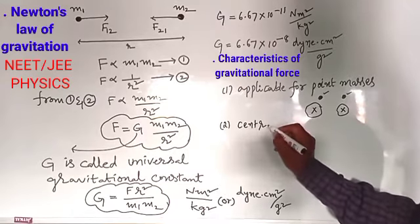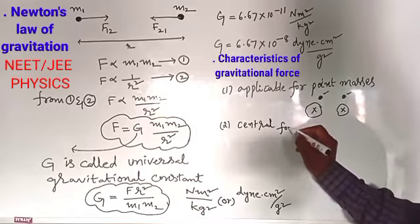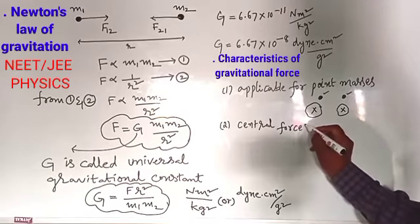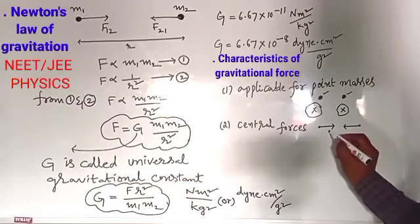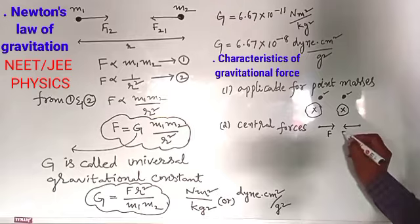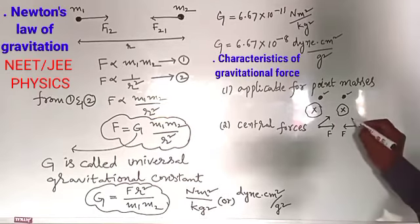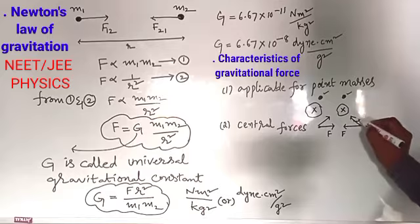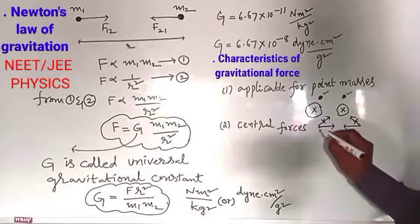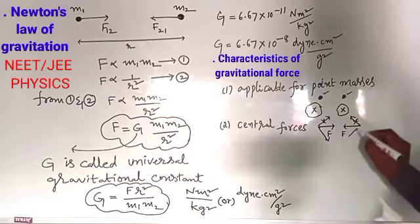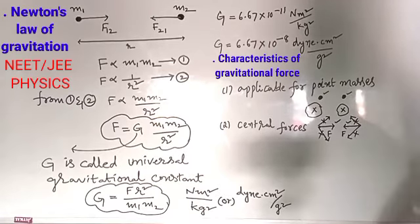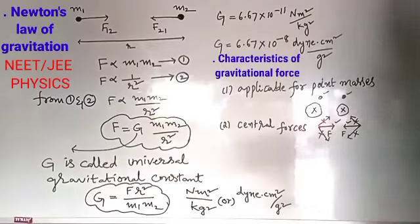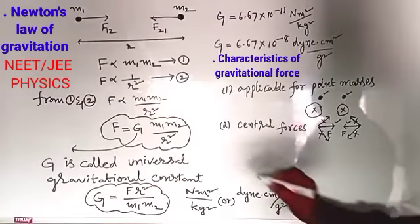The second characteristic is that gravitational force is a central force. That means it acts from the center of one object to the center of another object, along the line joining the two centers. It does not act in other directions — it acts strictly along the line joining the centers of the two masses.